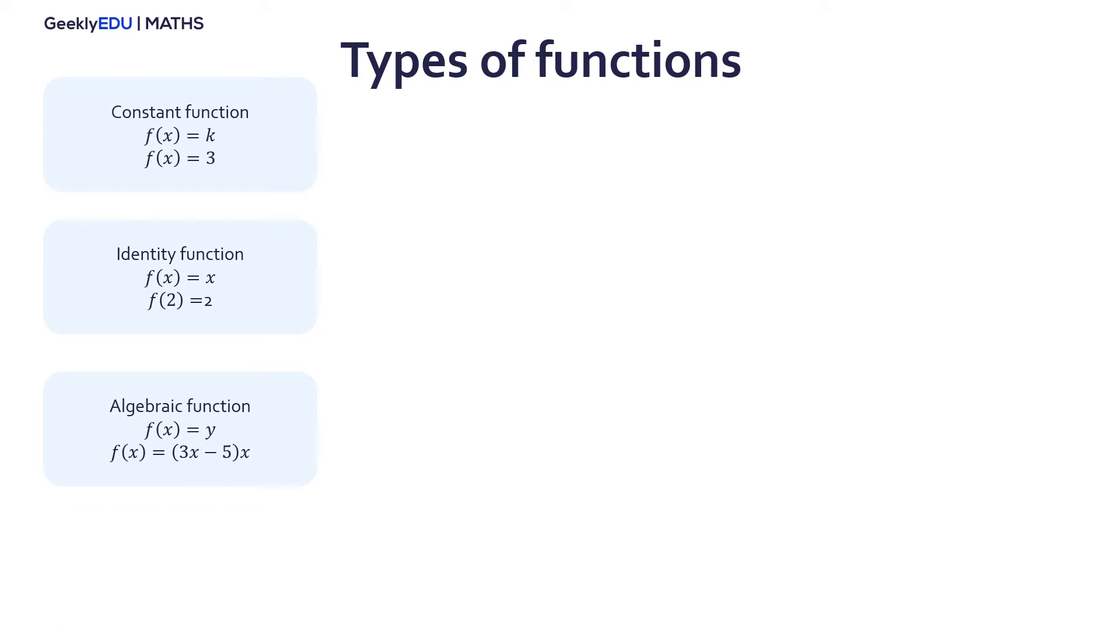The periodic function can be of any type, but the independent variable is summed with a constant when evaluating, called a period. A polynomial function are the sum of powers of the independent variable multiplied by constants. Its domain is all real numbers.